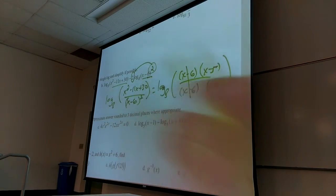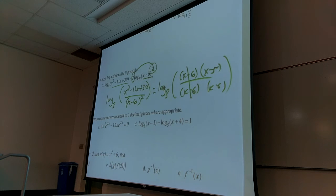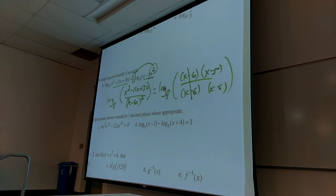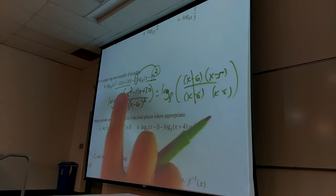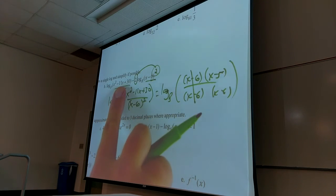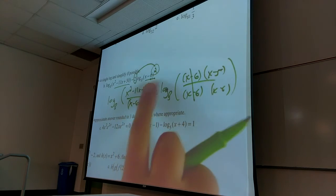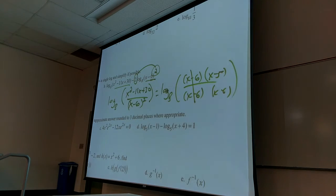Some of you worry so much about every piece of this. This is log of something, minus — when I move that out of the way — log of something. So that's log of the first thing over the second thing. Can you do 5c?